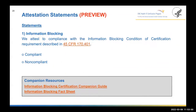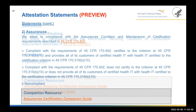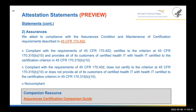As a preview: because the requirement is to attest to compliance for each condition and maintenance of certification, developers will see each requirement laid out. Starting with information blocking, which applies to all active certified health IT developers — they will be asked to attest to their compliance or non-compliance. Companion resources are available for information blocking in the form of a CCG and a fact sheet. Similarly, for assurances, the condition applies to all certified health IT developers, so they will need to indicate their compliance or non-compliance. With compliance, there are two paths depending on whether the B10 certification criteria is applicable to the developer.